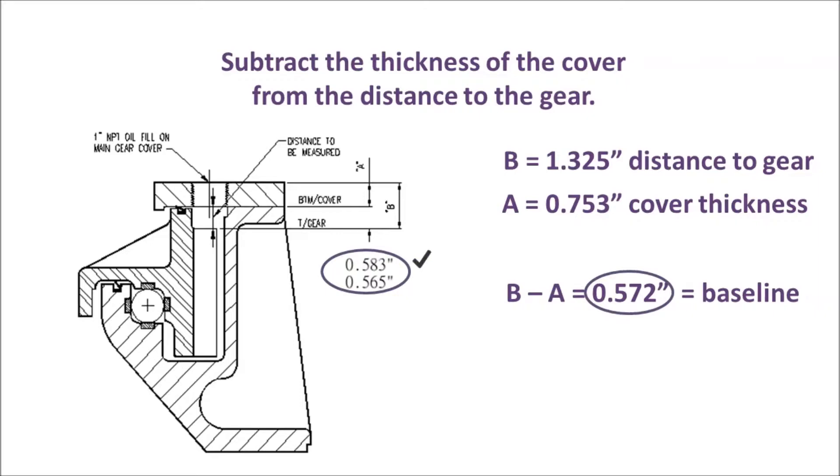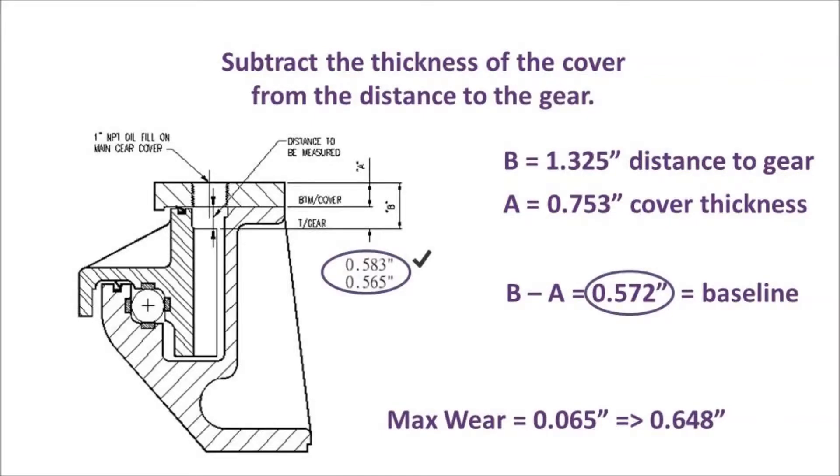The maximum allowed wear on a bearing is .065, which when added to our baseline measurement gives us a limit of .648, at which point you will need to replace your bearings or risk damaging the strip liner grooves or running the gear against the oil dam. Failure to change the bearings could result in a much more expensive repair or even replacement of the entire drive.